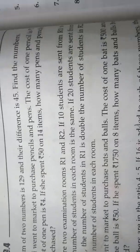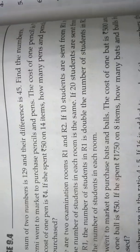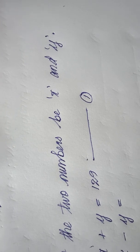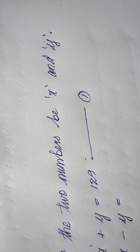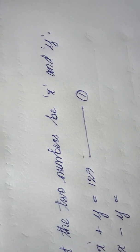We have to state that let the two numbers be x and y, because for unknown variables we use x and y because we don't know the numbers, we have to find it out.